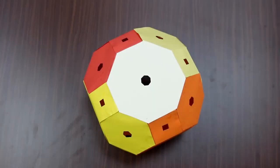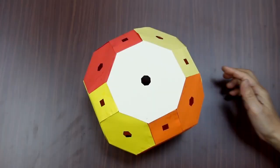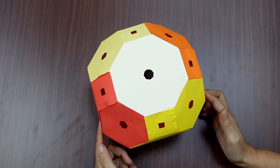Thus when all the flaps are joined to the side flaps we see truncated cuboctahedron form.